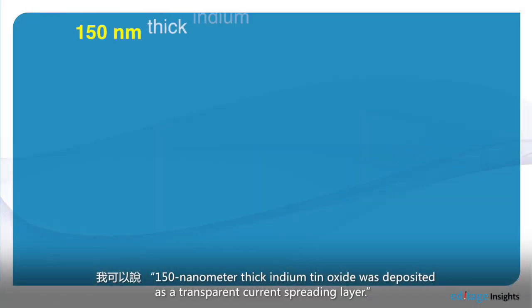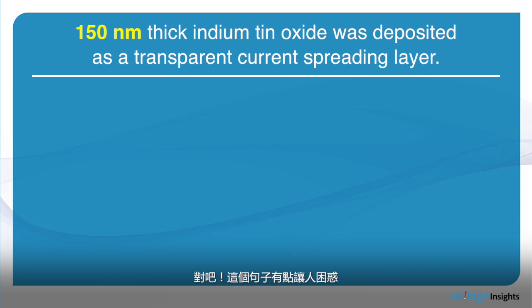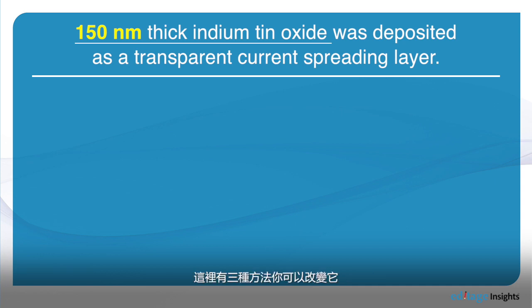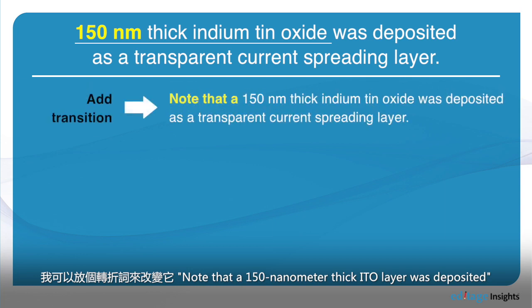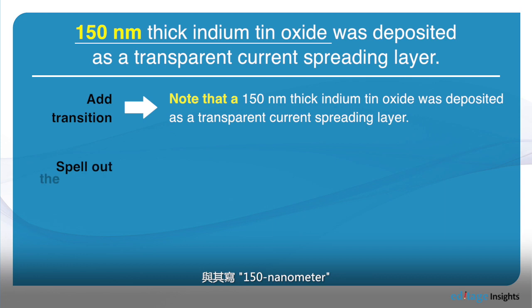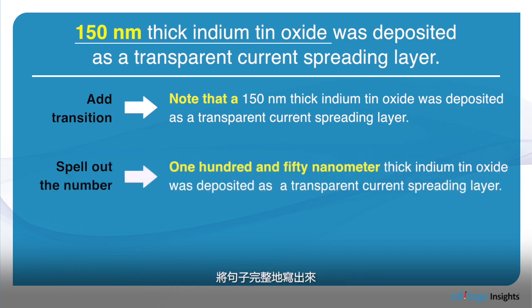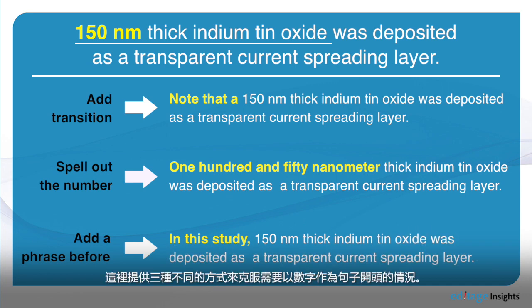As an example, I can say that '150 nanometer thick indium tin oxide was deposited as a transparent current spreading layer.' This sentence is a little bit confusing. There are three ways to change this. I can add a transition: 'Note that a 150 nanometer thick ITO layer was deposited.' I can put words at the beginning of the sentence, writing out the full term instead of just '150 nanometer.' Or I can use a different transition, such as 'In this study,...' So there are three ways to overcome having a number at the start of a sentence.